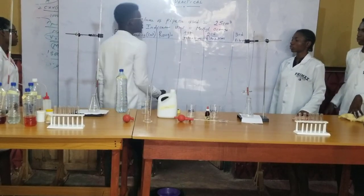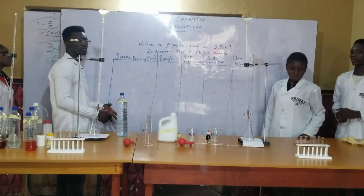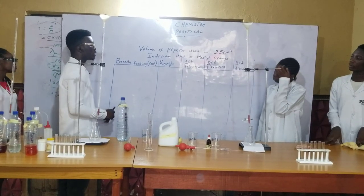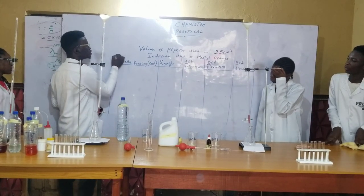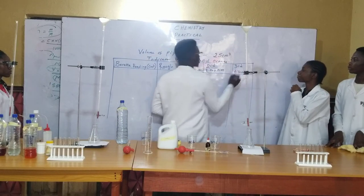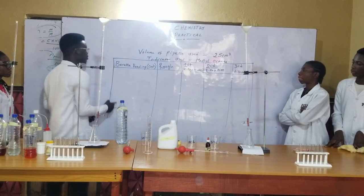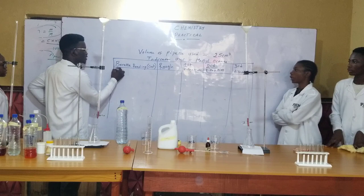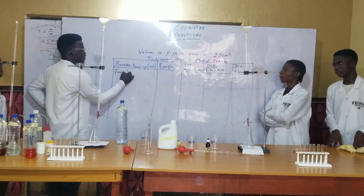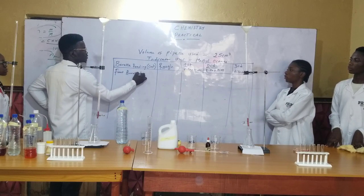Always use your ruler so that you get a neat table when you are drawing it — your table carries a lot of marks. We will have final burette's reading in cm³.